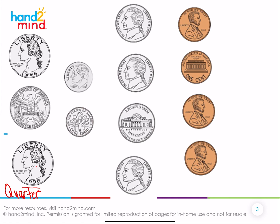The next one is called the dime. And what do you notice about the dime? It's really small, isn't it? It's one of our smallest coins that we have. And it's also silver. Does anyone think they know who's on the front of a dime? It's Franklin D. Roosevelt. Franklin D. Roosevelt is the person who is on the front of our dimes.